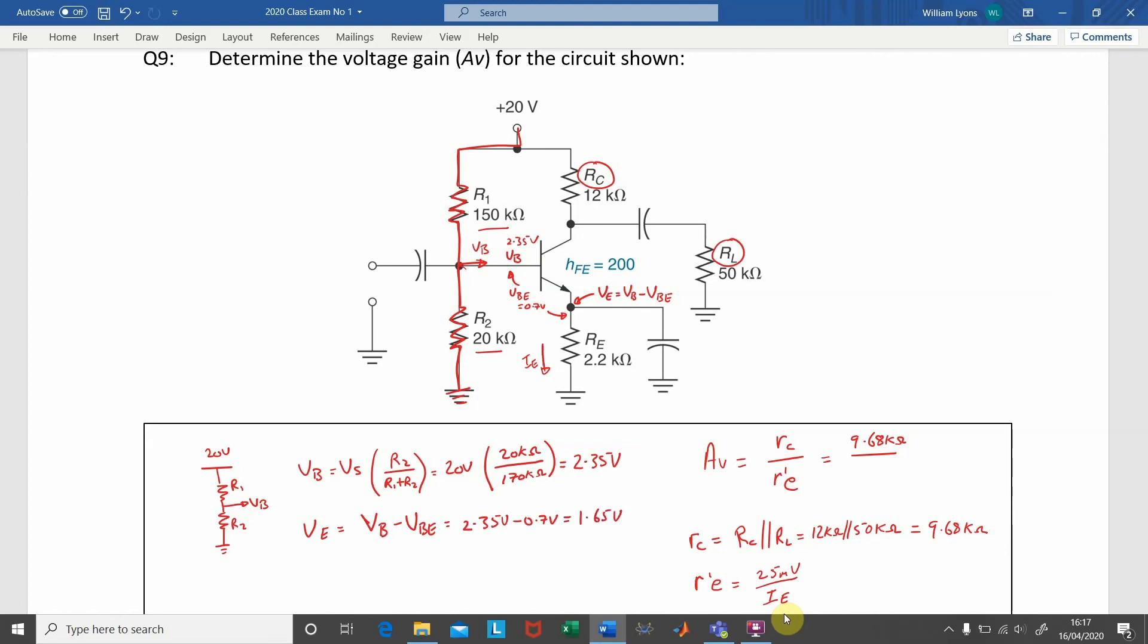We are now in a position to calculate IE using Ohm's law. IE is equal to VE divided by RE. So, putting in the values of VE equal to 1.65 volts and our emitter resistance given in the circuit diagram as 2.2 kilo ohms, we end up with an emitter current of 750 microamps.